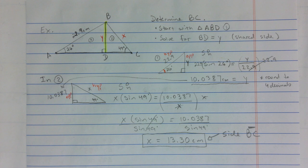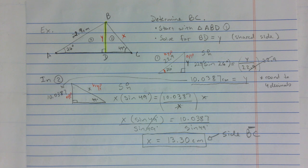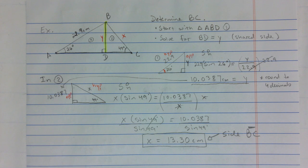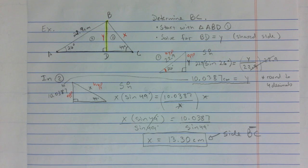Don't be too fixated on the fact that it was sine both times. This could have been a very different situation where you may have had to use sine first, then tangent on the second one — or tangent first, then cosine on the second. The way trig ratios show up will vary greatly. So let's do another example.